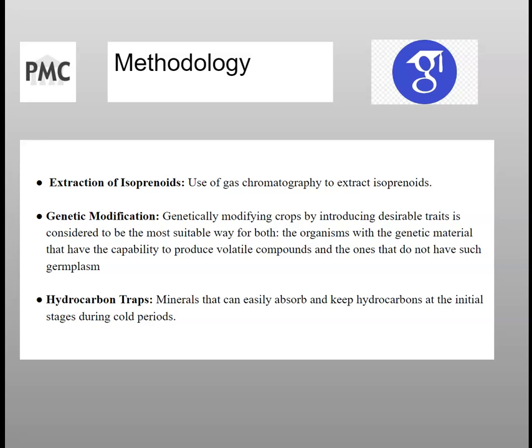The first step is the extraction of isoprene. Gas chromatography is used to extract isoprene, but it cannot be used at industrial scale. For genetic modification, genetically modifying crops by introducing desirable traits is considered to be the most suitable way. We can take a protein or gene from the plant metabolic pathway and test it in different conditions to see if it increases or decreases isoprene emission, using genetic modification techniques.